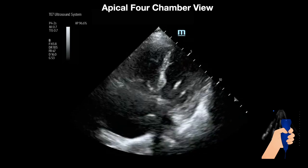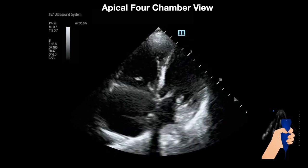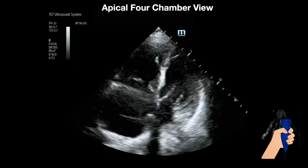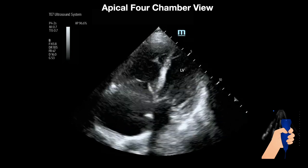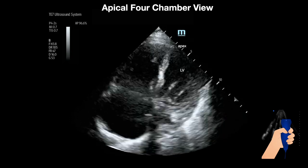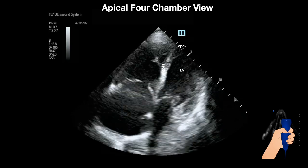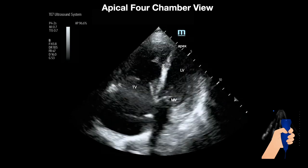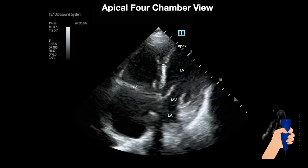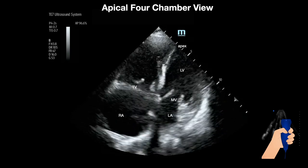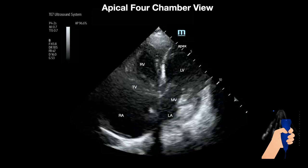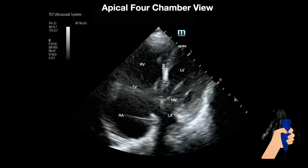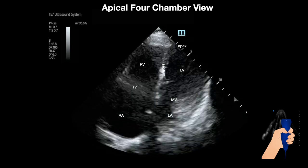Here is another patient, and this patient was also in the hospital and not able to cooperate. We can see again the left ventricle, the apex, the septum, the tricuspid valve, the mitral valve, the left atrium, the right atrium, and the right ventricle. Interestingly, this patient had atrial flutter and you can see the fluttering of the mitral valve.